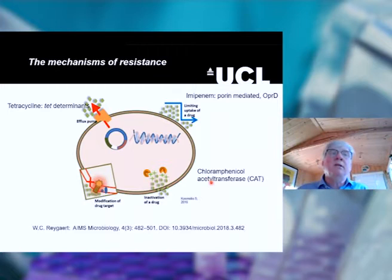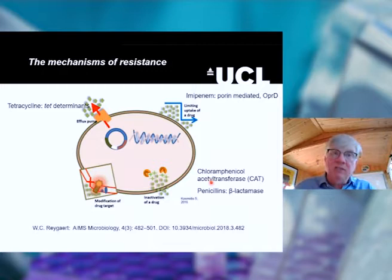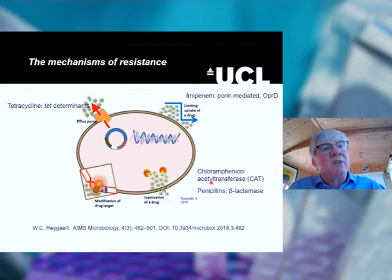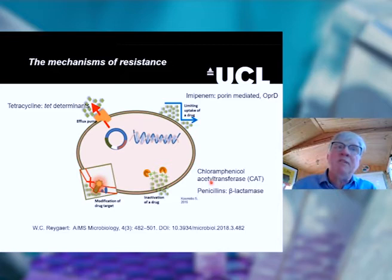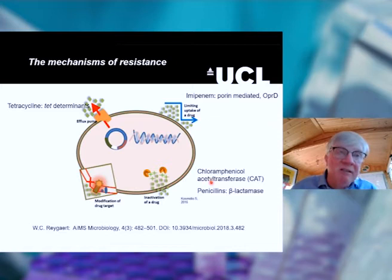Then you have bacteria which can inactivate the drug. Famously, the penicillins are limited by the release of beta-lactamases by the cell. Chloramphenicol can be inhibited by the production of specific acetyltransferases. These are molecules released and produced by the bacterial cell which diminish and inactivate the effect of the antibiotics.